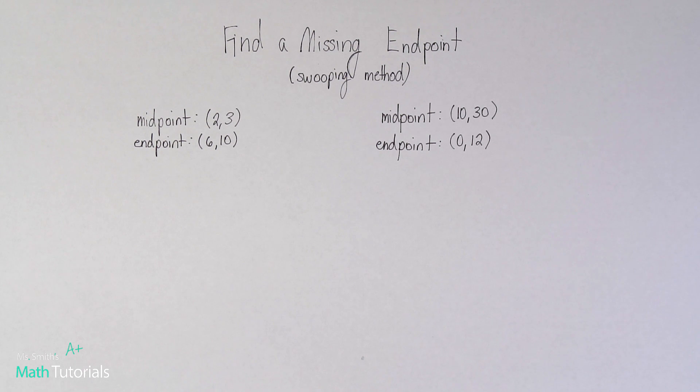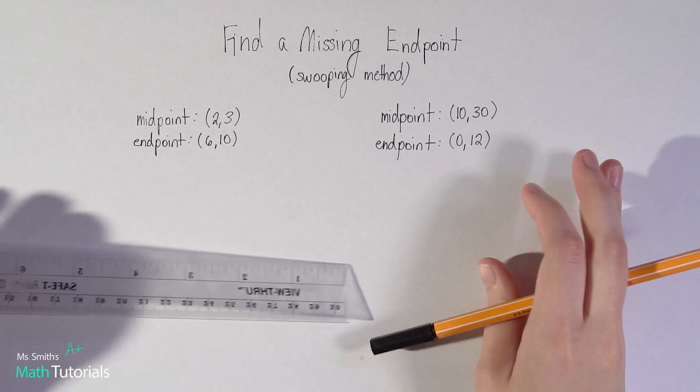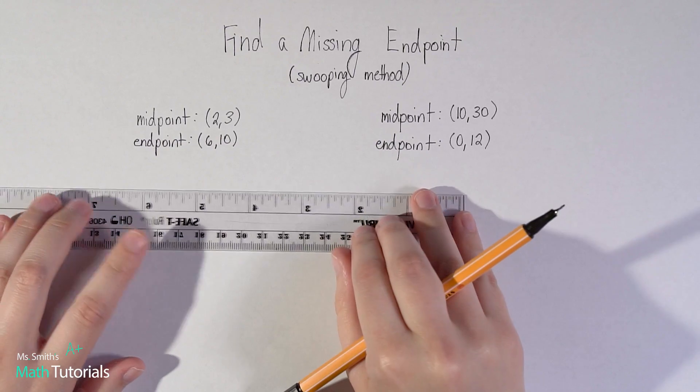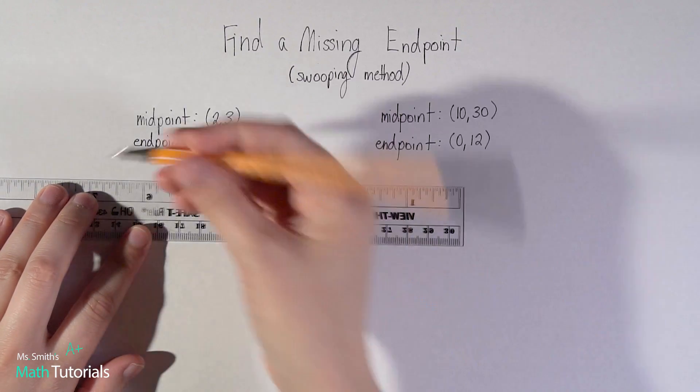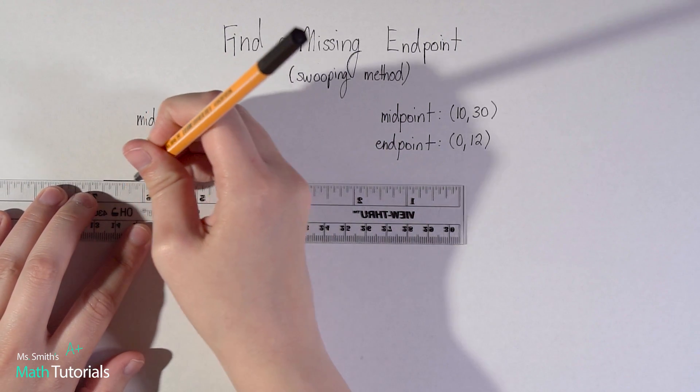I'm going to be showing the swooping method. There are other ways to do this. I just have found that students seem to like the swooping method the best and it's the easiest for them to remember, but this is by no means the only way to do this. I think it's best if you draw this out. I think it just helps to visually see it.